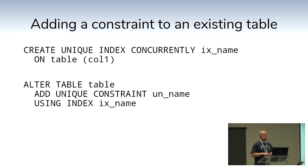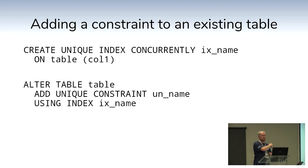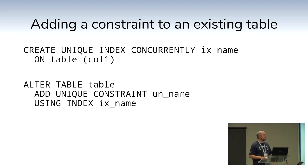If you have an existing table and want to add a unique constraint without locking it: first CREATE UNIQUE INDEX CONCURRENTLY, let that finish building, then ALTER TABLE ADD UNIQUE CONSTRAINT USING that index. It won't build its own index — it'll use the one you already created. That's a neat trick to add a unique constraint later when you have too many rows to afford the lock.